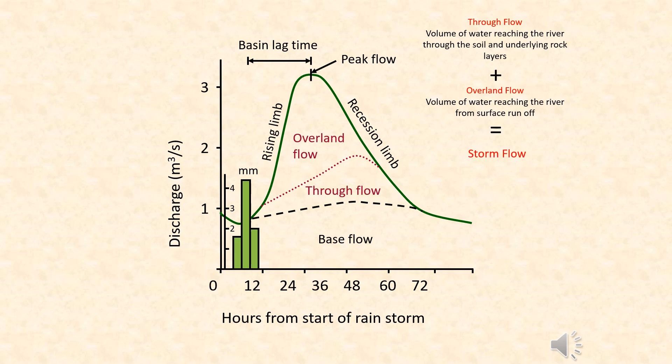Our final storm hydrograph has all of the points plotted on it, including the overland flow and the through flow. These are the main constituent parts of the full river discharge — how water gets to the river, either overland or through the soil. The total amount is what we call the storm flow, and the greater the storm flow, the more likely it is for a river to flood.